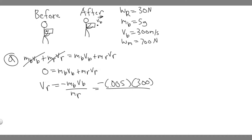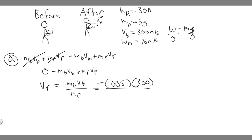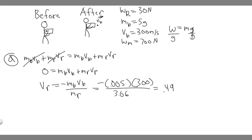We don't know the mass of the rifle directly — we know its weight is 30 newtons. Since weight equals mass times gravity, mass equals weight divided by g, which is 30 divided by 9.8, giving us 3.06 kilograms. So we compute: 0.005 times 300 divided by 3.06, which gives 0.49 meters per second.